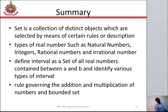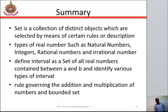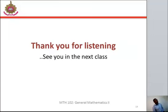We have come to the end of this class. Let's do a quick recap: we discussed sets as a collection of distinct objects selected by means of a certain rule or description. We talked about types of real numbers such as natural numbers, integers, rational and irrational numbers. We defined interval as a set of all real numbers contained between two points A and B, and identified various types of interval. We also discussed the rules governing addition and multiplication of numbers, and discussed bounded sets. You can read through your study pack to complement your knowledge. Thank you for listening. See you in the next class.